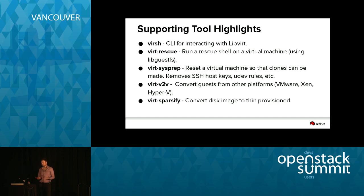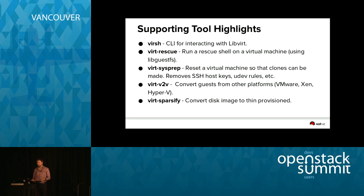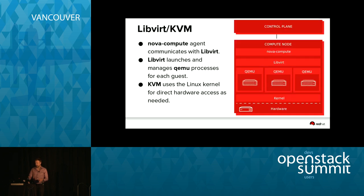virt-rescue lets you run a rescue shell on a virtual machine — for example if on a Saturday you kill your guest in some unfixable way, you can get in and sort that out. virt-p2v is for creating templates, virt-v2v for converting from other environments, and virt-sparsify for converting to thin provisioning. These are all useful tools you can use with OpenStack images intended for use with LibVirt KVM.